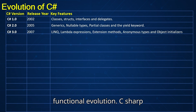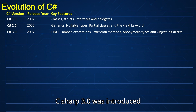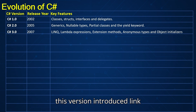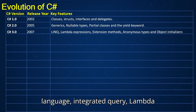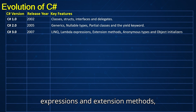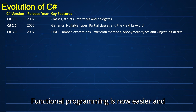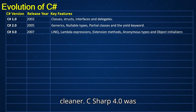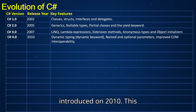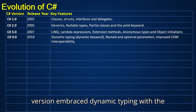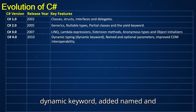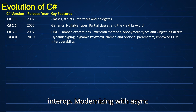Functional evolution — C-sharp 3.0 was introduced in 2007, a game changer. This version introduced LINQ (Language Integrated Query), lambda expressions and extension methods, anonymous types, and object initializers. Functional programming became easier and cleaner. C-sharp 4.0 was introduced in 2010 — this version embraced dynamic typing with the dynamic keyword, added named and optional parameters, and improved COM interop.